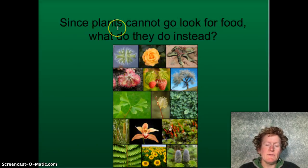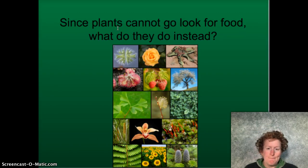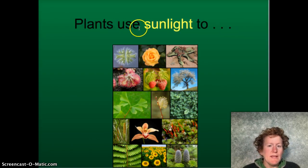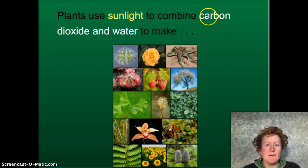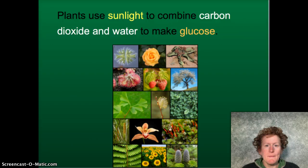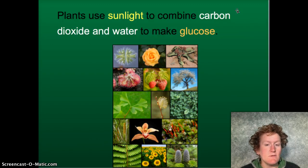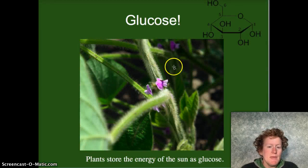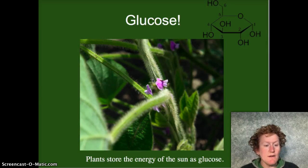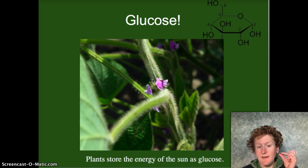Since plants cannot go look for food, they don't take glucose in — they have to make their own glucose. Plants use sunlight to combine carbon dioxide from the air and water to make glucose. Most of the mass of all of these plants is carbon dioxide and water. That carbon dioxide comes out of the air, so a lot of the mass of plants is actually air that they take in. They make glucose and store the energy of the sun as glucose in their leaves.